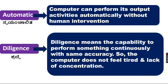Next is automatic. A computer can perform its activities automatically without human intervention. Once you give it the data and the instructions, it will carry out the same task automatically every time without requiring you to intervene.